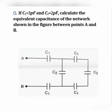If C1 equals 3 pF and C2 equals 2 pF, calculate the equivalent capacitance of the network shown in the figure between points A and B.